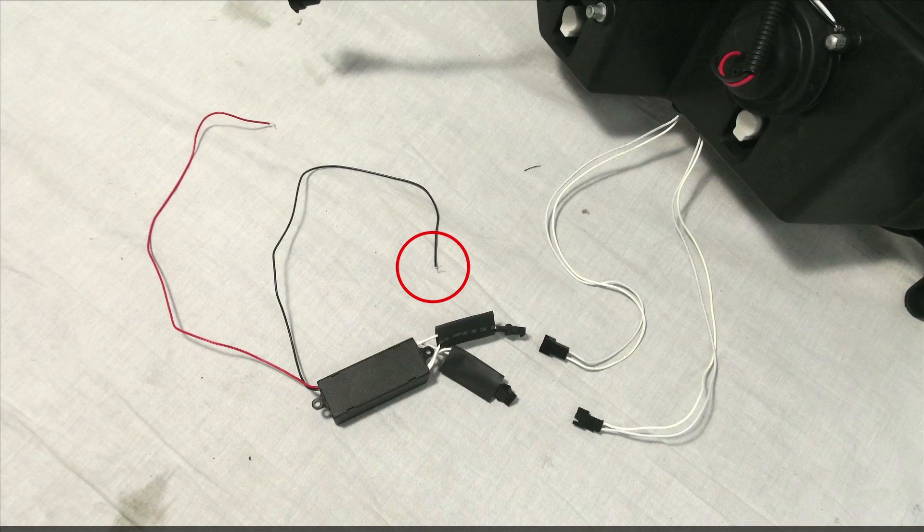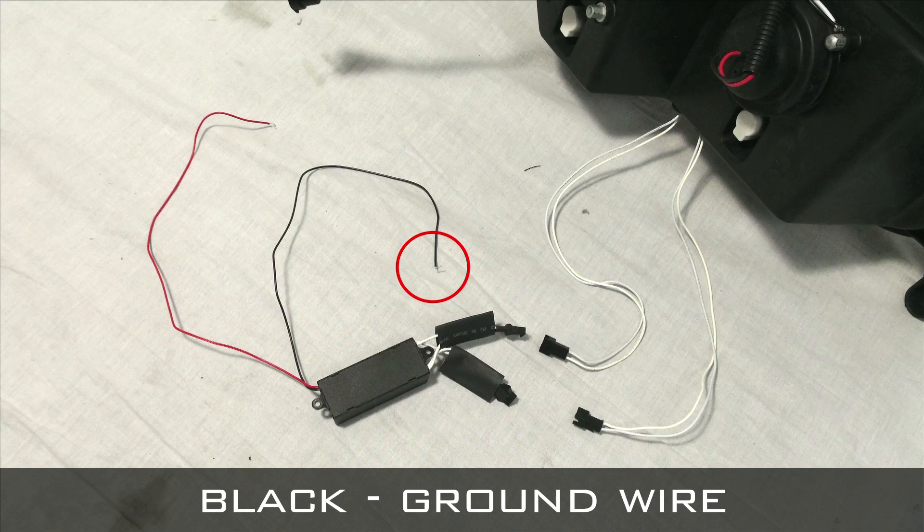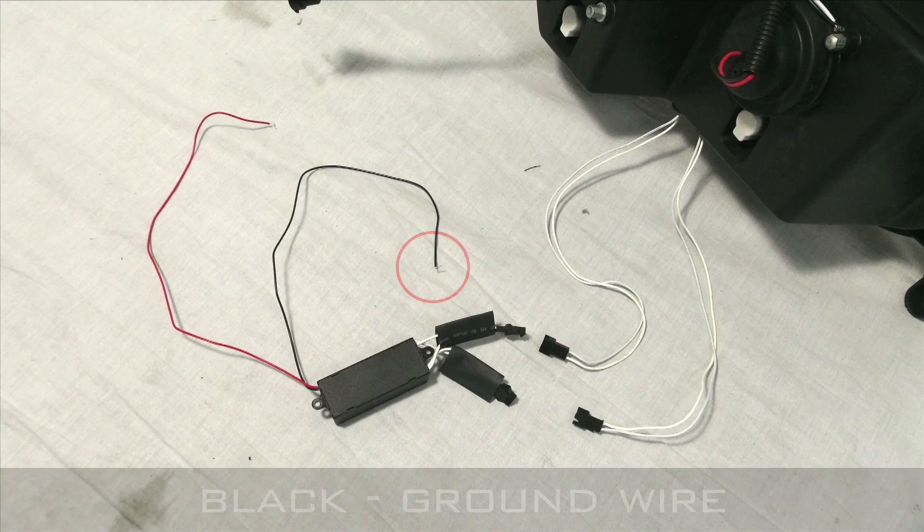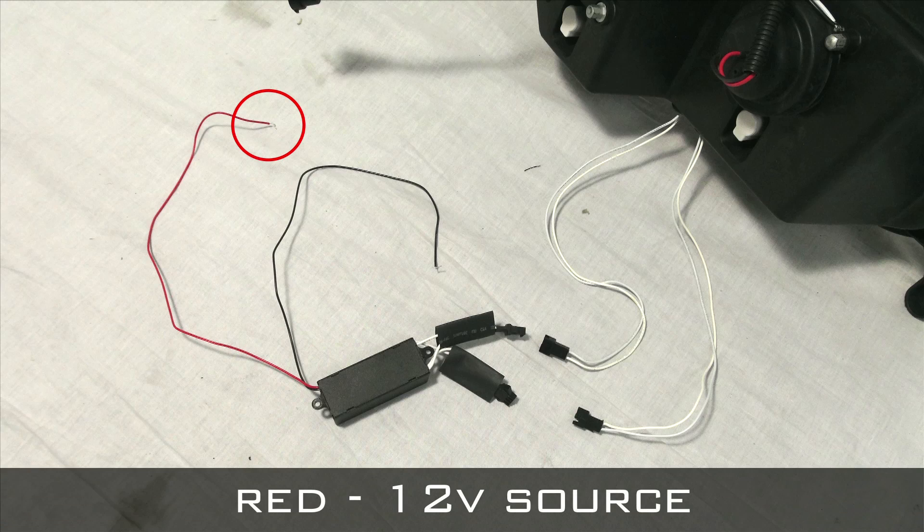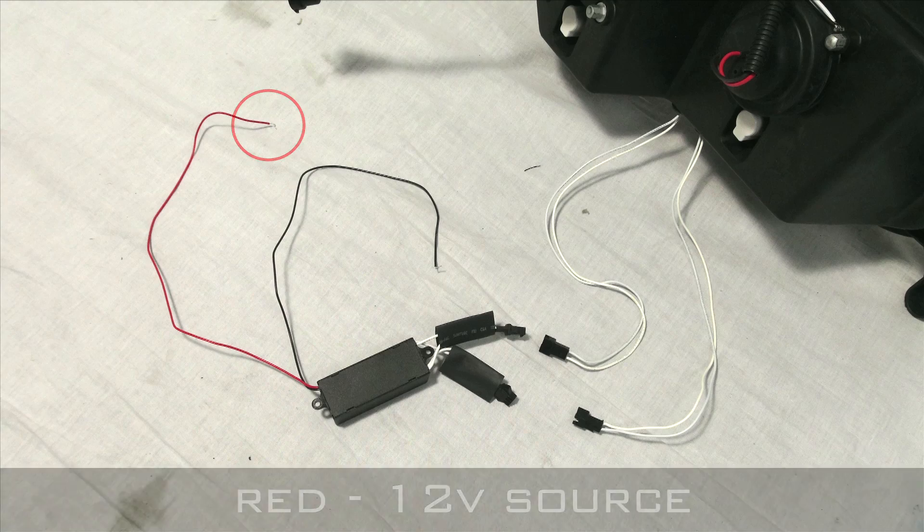The black wire is designated as a ground. It is recommended that it be installed to a chassis ground. The red wire is designated as a 12 volt source and that wire must be tapped into the parking light 12 volt wire on the vehicle.